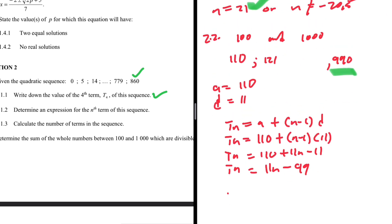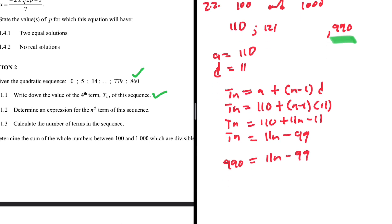Substituting 990: 990 = 11n + 99, so 990 - 99 = 891, giving 891 = 11n. Dividing 891 by 11 gives a whole number, so n = 81. We have 81 terms between 100 and 1000 which are divisible by 11.